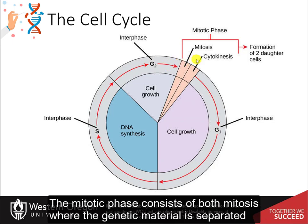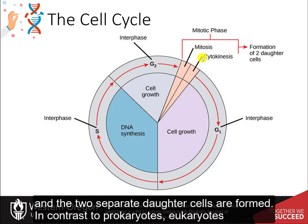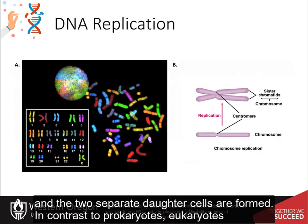The mitotic phase consists of both mitosis, where the genetic material is separated into two different poles within the cell, and then cytokinesis, where the cytoplasm is split and the two separate daughter cells are formed.